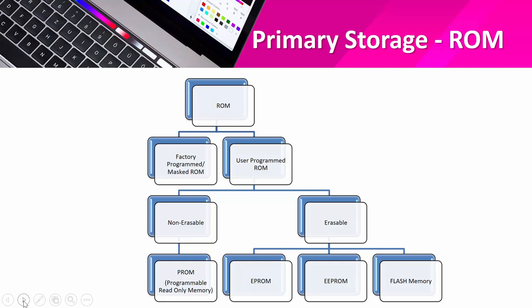There are two types of ROM: factory-programmed (also called Mask ROM) and user-programmed. Factory-programmed ROM is permanent. User-programmed ROM can be divided into two types: non-erasable and erasable. Non-erasable means the user programs it once and saves it, then it cannot be erased. Erasable means we can continuously erase the data. The non-erasable type is PROM (Programmable Read-Only Memory), and the erasable types are EPROM, EEPROM, and flash memory. Flash memory is also found in mobile devices.